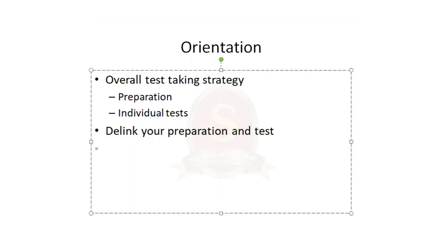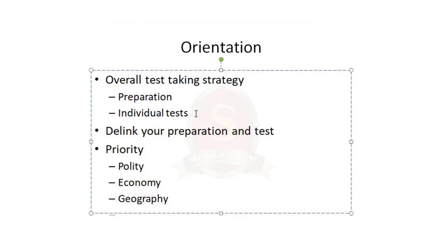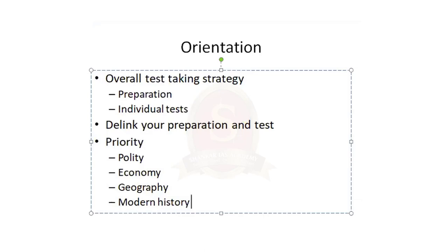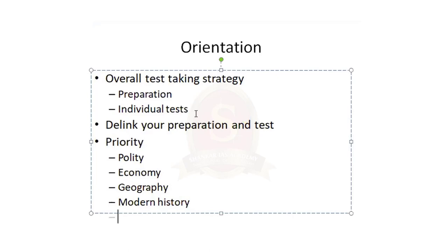Always prioritize in your preparation. The four core subjects are polity, economy, geography, and modern history. Science and technology, governance — those will be covered in current affairs. Art and culture: however much you study, they ask only four or five questions and you can answer two. After completing one basic book for art and culture as a second priority, focus on these core areas first.